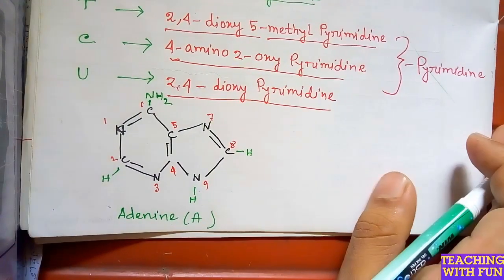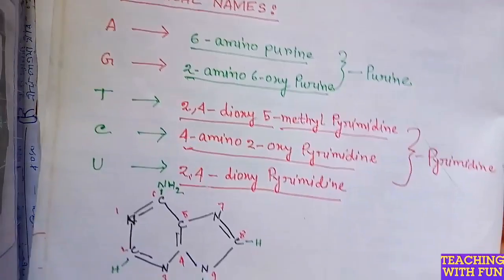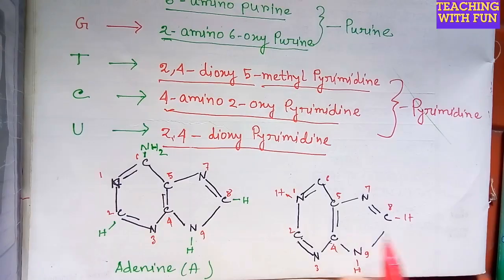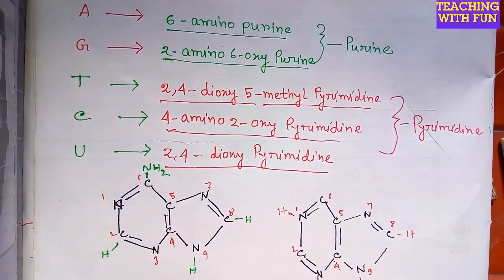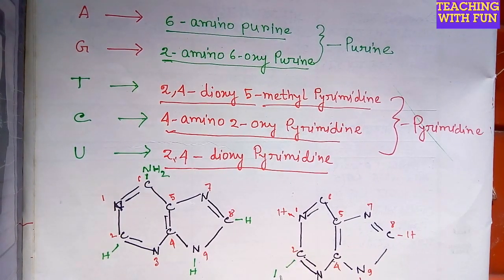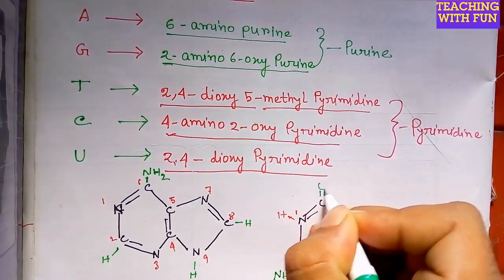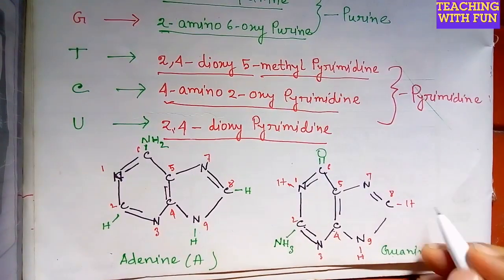Next is guanine, whose chemical name is 2-amino-6-oxypurine. We draw the purine base structure again. At the 2nd position there is an amino group (NH2), and at the 6th position there is an oxy group (=O). This is the structure of guanine.